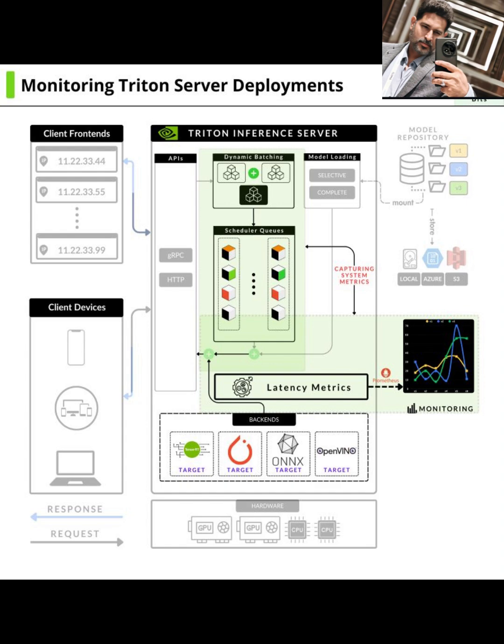The heart of our operation is the Triton Inference Server. This is where our AI models are actually running and serving predictions. Let's zoom in on what's happening inside. Triton exposes different APIs like gRPC and HTTP, which our client frontends use to communicate with it. These are the channels for sending requests and receiving results.